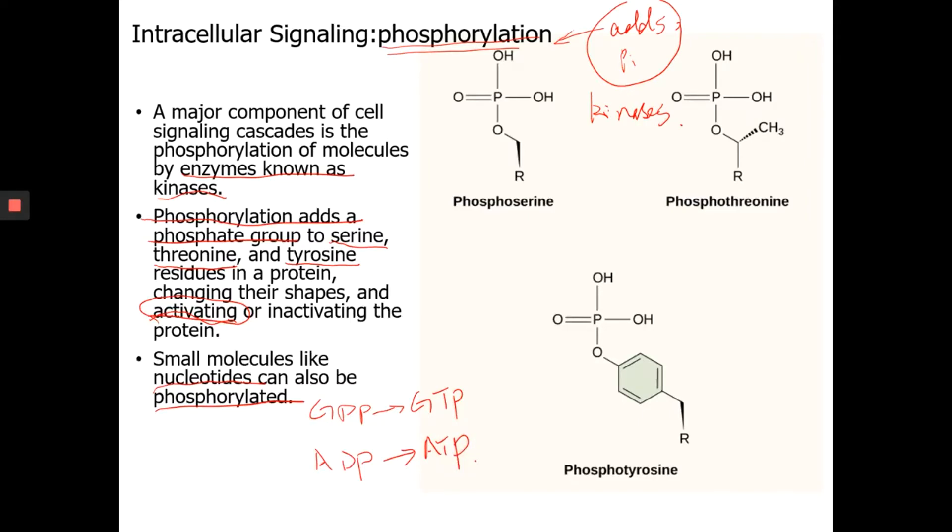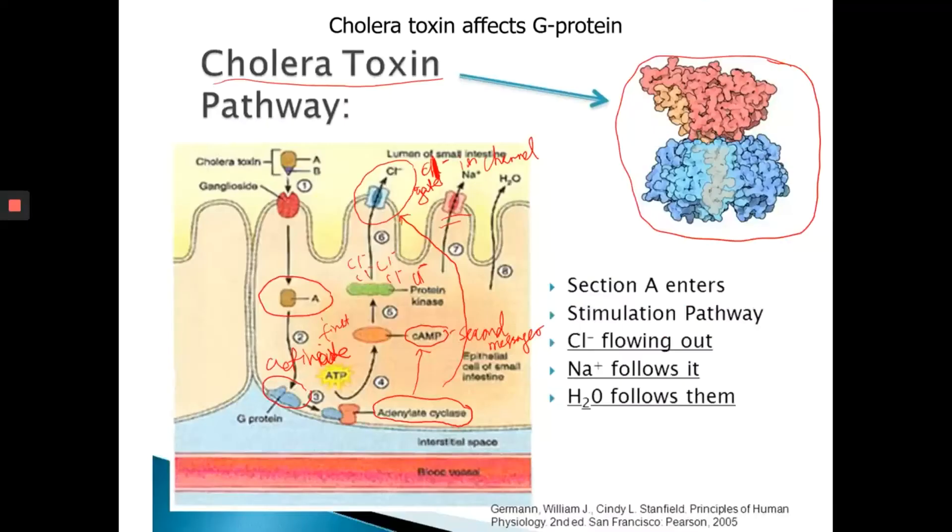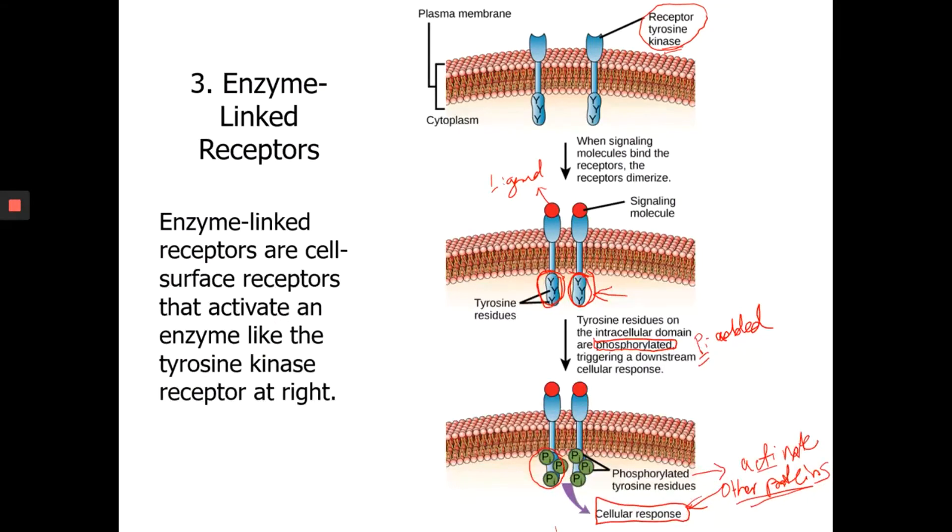This concept is important because when we talk about enzyme-linked cell surface receptors, we actually use that concept of phosphorylation. This is the enzyme portion of the receptor, and then you have tyrosine amino acids in that enzyme because most of the enzymes are proteins, and proteins are made of amino acids. So there are tyrosine residues in the enzyme portion of the protein receptor. When you activate the enzyme, that means the enzymes are phosphorylated at the tyrosine residues.